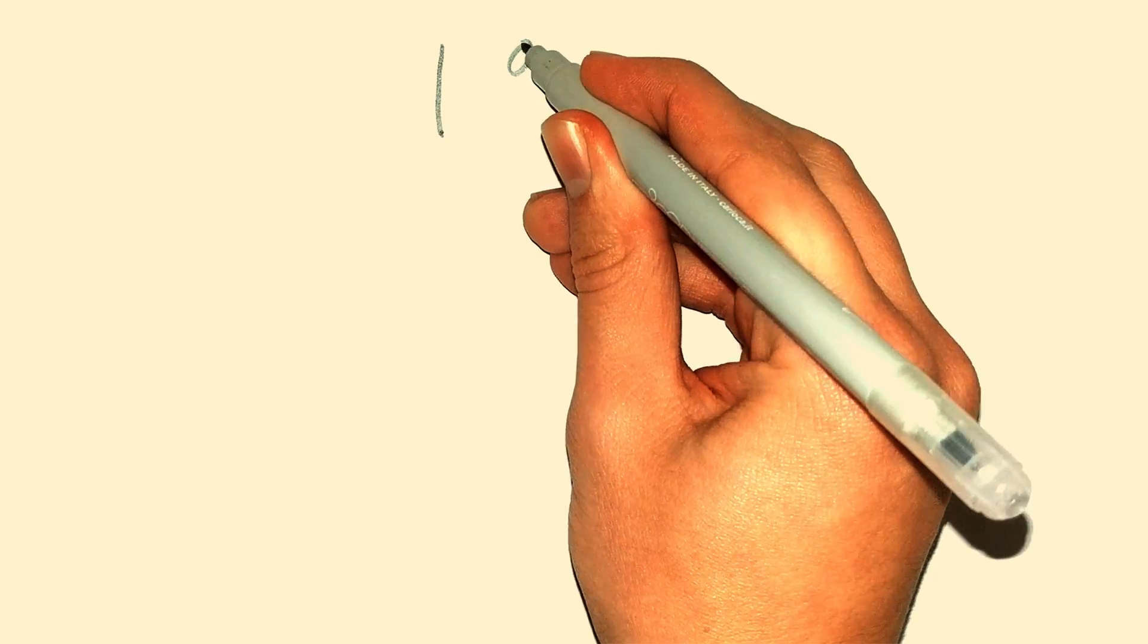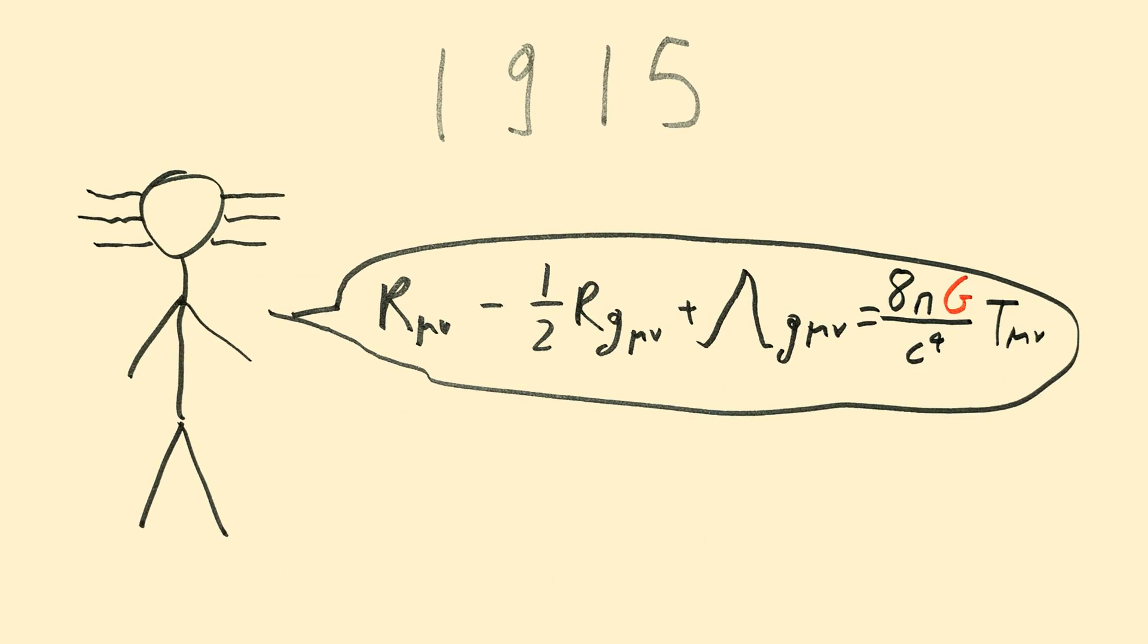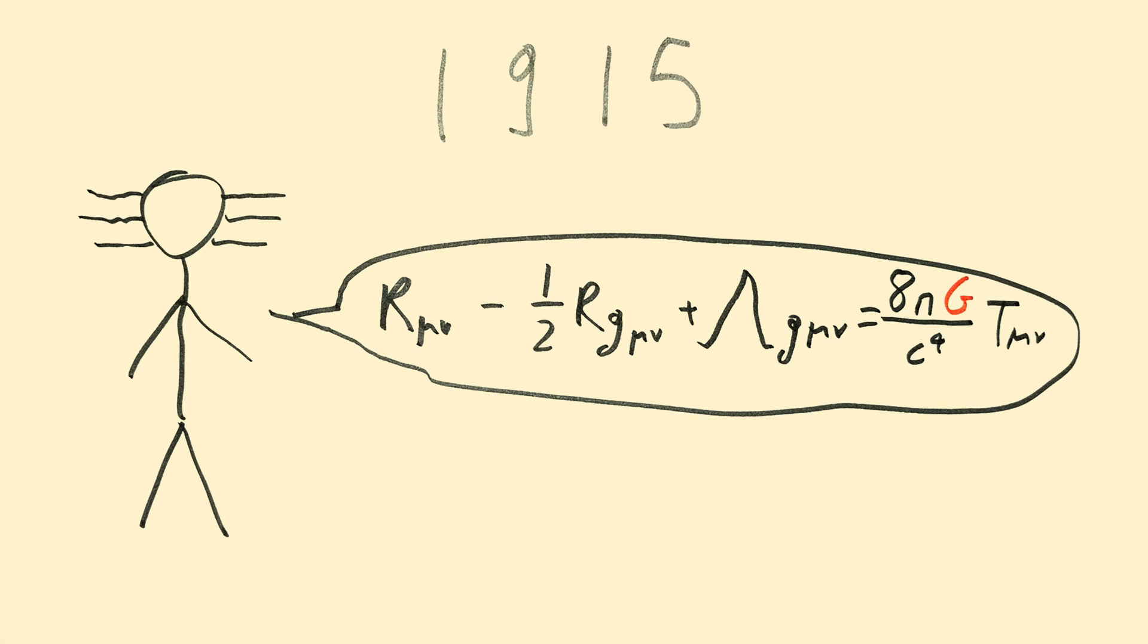But G is also used in the modern version of gravity. In 1915, Einstein proposed his general theory of relativity, and general relativity completely replaces the law of universal gravitation. But there is one feature of the law that does make it in GR, and that's G. As you can see, G is present in Einstein's equations.